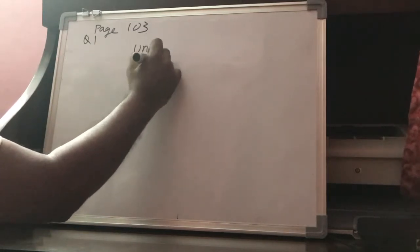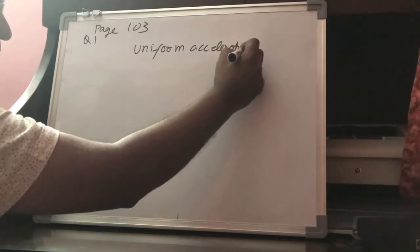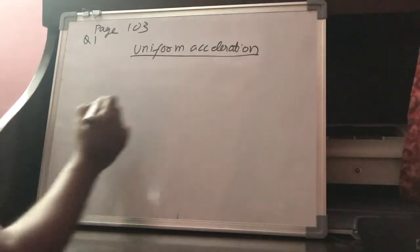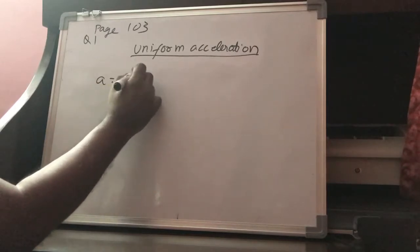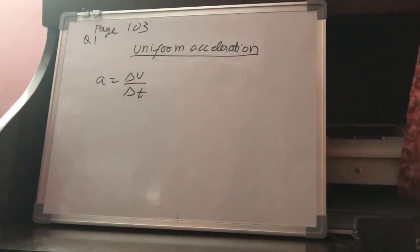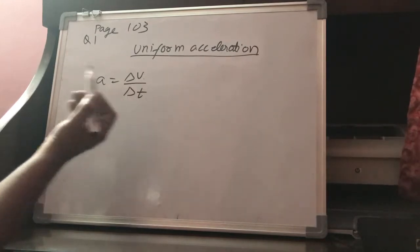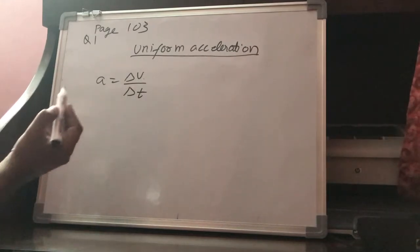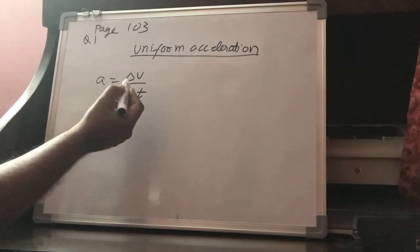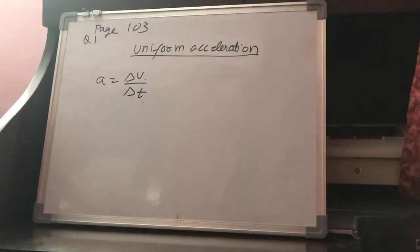Let us try to understand the concept of uniform acceleration. Acceleration is defined as the ratio of delta V by delta T. If a particle experiences equal change in velocity in equal time intervals, then the acceleration is said to be uniform.